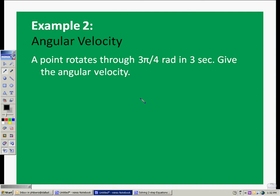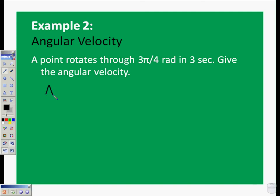Angular velocity is equal to how much angle it rotates through and how much time. So it's going to be theta over the amount of time, where theta is in radians.